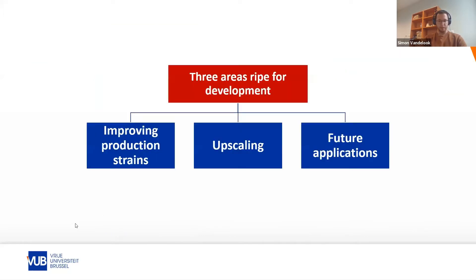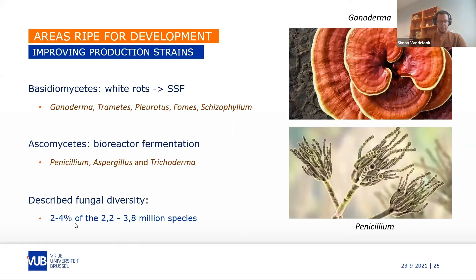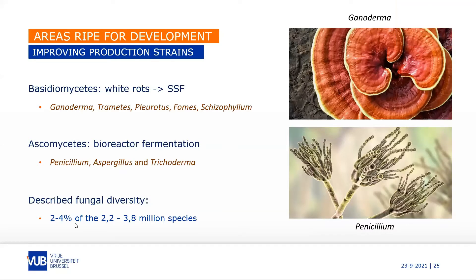Looking at areas that can be developed — for improving production strains, when using solid state fermentation, white rot basidiomycetes are most popular because they are champions at degrading lignocellulosics. Some examples are Ganoderma, Trametes, Pleurotus, Fomes, and Schizophyllum, but there are many more.